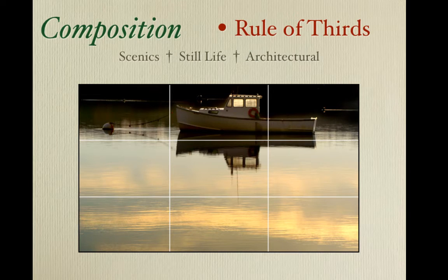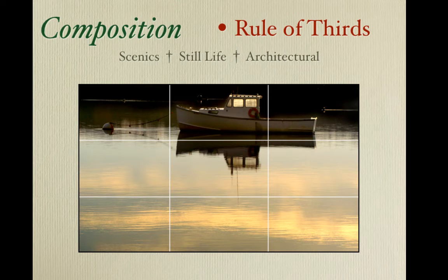Anytime you have a strong line in the image, such as this, you want to try and place the horizon line on one of the thirds. In this case, I'm using the edge of the boat reflection because I want to have the major part of the information in the upper portion of the image.